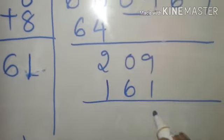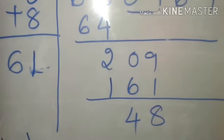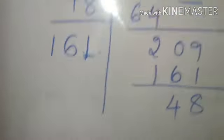So one into 161 is 161. So nine minus 1 is 8 and 20 minus 16 is 4. Okay. So continue the division. The same.